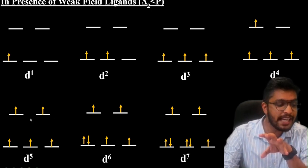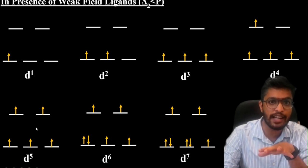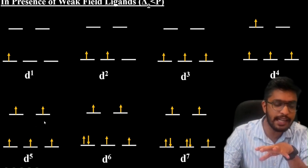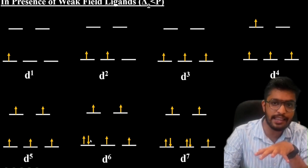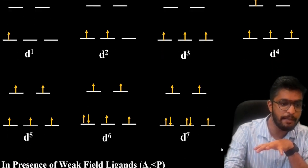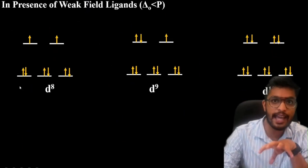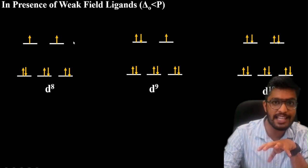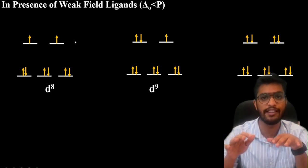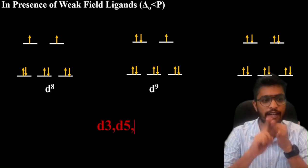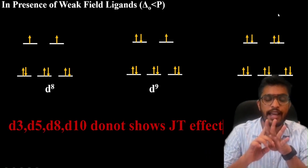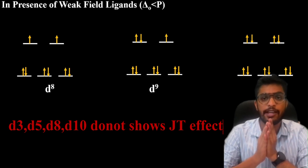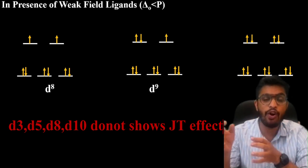D3 configuration is symmetrically arranged, so there is no Jahn-Teller distortion. D3 and d5 show no Jahn-Teller distortion. D6 again has asymmetrical T2G orbitals. D7 again asymmetrical. D8 has symmetrical arrangement - no Jahn-Teller distortion. D3, d5, d8, and d10 show no Jahn-Teller distortion.